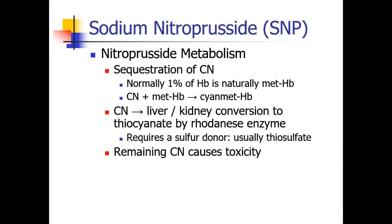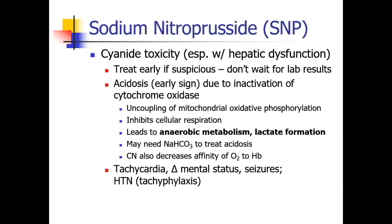If there's extra cyanide that isn't scavenged by your hemoglobin, it can lead to toxicity, and cyanide toxicity is very dangerous. This is especially an issue in patients with poorly functioning livers. The earliest sign of nitroprusside toxicity is acidosis. Cyanide inactivates cytochrome oxidase, which basically uncouples the oxidative phosphorylation that occurs in your mitochondria, inhibiting cellular respiration. There's lots of oxygen in your cells, but they're no longer able to use it, so they switch to anaerobic metabolism and produce a lot of lactate, which causes the acidosis.